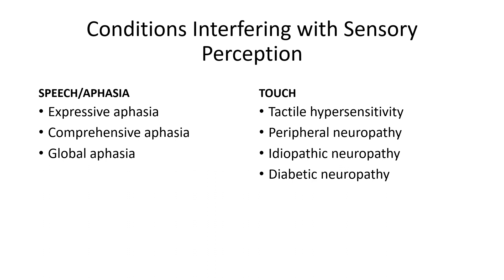Comprehensive aphasia can also cause an individual to not understand what is being said, and they are unable to comprehend that others can't understand what they are saying. Global aphasia can be due to significant damage to various language areas of the brain. Individuals with this type of aphasia have poor comprehension of language and may be unable to form words or sentences.